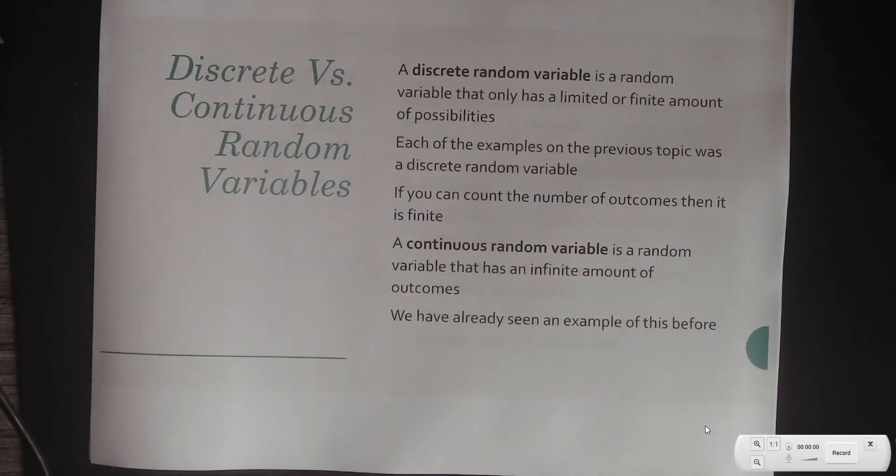A discrete random variable is a random variable that only has a limited or finite amount of probability. I always tell people if you can count them, that's discrete, it's finite. Each of the examples in the previous topic was a discrete random variable because they only have a countable amount. If you can count the number of outcomes, then it's finite.